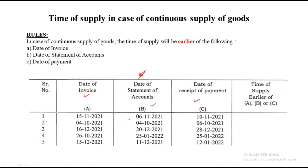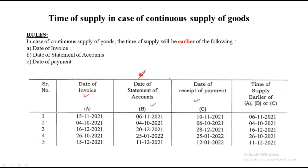So 15th November, 6th November and 10th November — the earliest is 6th November. 4th October, 4th October and 6th October — 4th is the earliest. 16th December, 12th December and 28th December — earliest is 16th December. 26th October 2020, 25th January 2022 and 25th January 2021 — the 2021 date is earliest. 15th December, 11th December and 12th January 2022 — comparing the first two, 11th December is earlier. So 11th December is the time of supply under continuous supply of goods. Again very simple — just follow the particular rule.